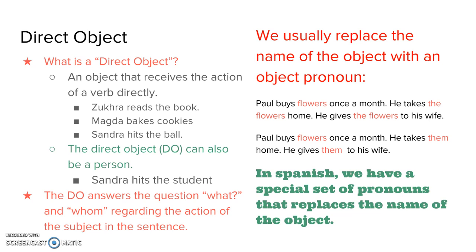We're going to talk about direct objects. A direct object receives an action of a verb directly. Let's look at these sentences: Sucra reads the book. Magda bakes cookies. Sandra hits the ball. In all of these sentences, you can find the subject, who is doing the action, the verb, what the action is, and then something that is affected by this action. The book, cookies, and the ball are direct objects.